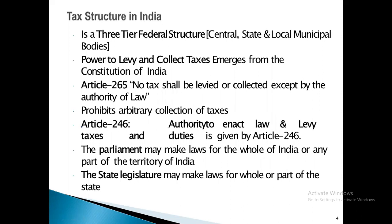The tax structure in India is a three-tier federal structure: the central government, state governments, and local municipal bodies. The power to levy and collect taxes emerges from the Constitution of India. Article 265 states that no tax shall be levied or collected except by the authority of law. Article 246 gives authority to enact laws and levy taxes — Parliament may make laws for the whole of India or any part thereof, and state legislatures may make laws for their respective states.